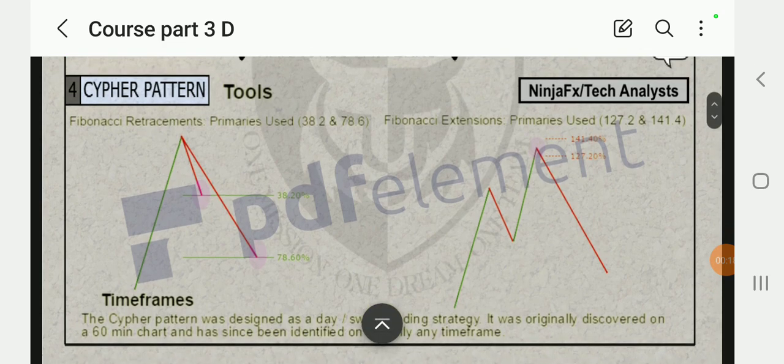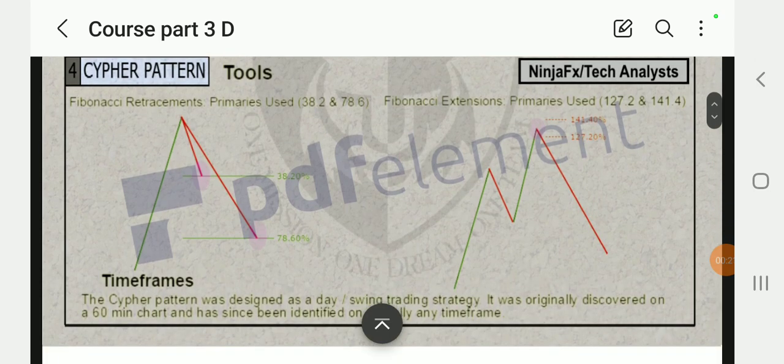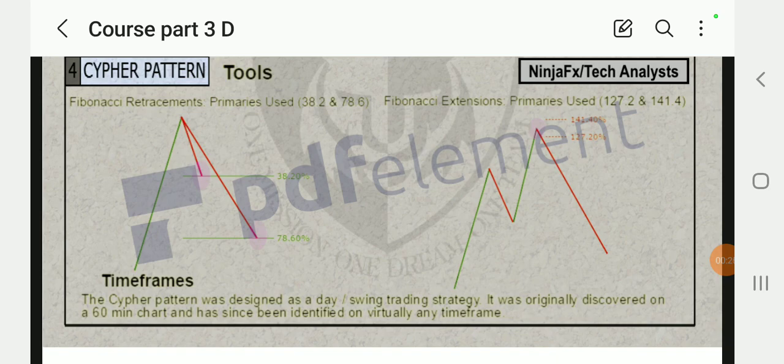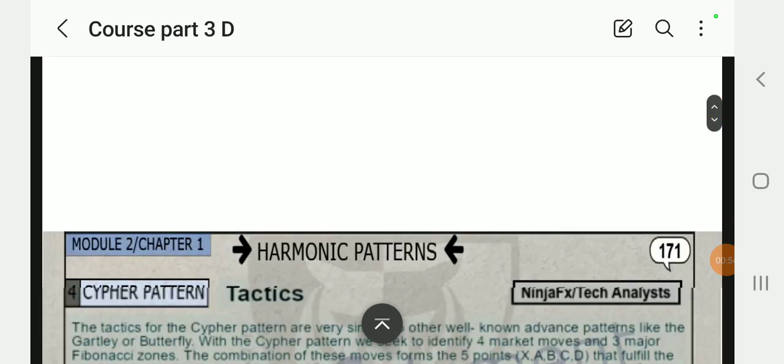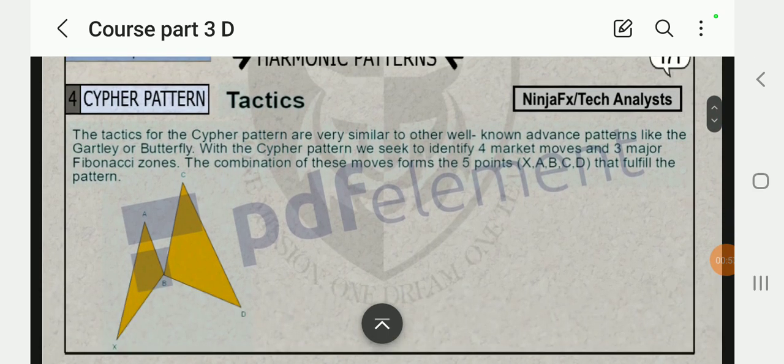Harmonic retracement is one of the tools all these patterns use to measure the levels, the percentage, take profit target, break even target, or retracement targets. The Cypher pattern was designed as a day swing trading strategy. It was originally discovered on a 60 minute chart and has since been identified on virtually any time frame. So this pattern was discovered in a one-hour chart which is 60 minutes.